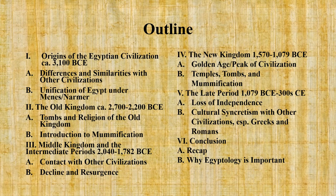We'll discuss the origins of the Egyptian civilization starting around 3100 BCE and some of its similarities and differences with other contemporary civilizations. Then we'll discuss the Old Kingdom from about 2700 to 2200 BCE, which was the period of the pyramids. We'll also discuss the introduction of artificial mummification in ancient Egyptian society. After that, we'll discuss the Middle Kingdom and the intermediate periods, and how the Egyptian civilization came into increased conflict with other civilizations and empires in the region.